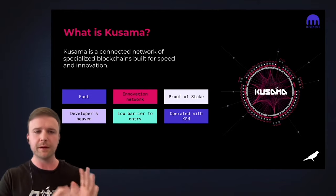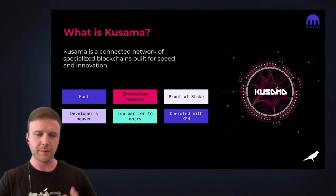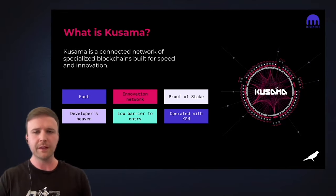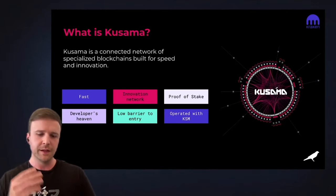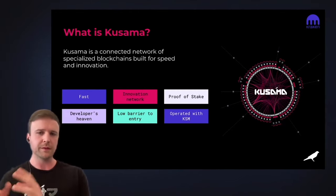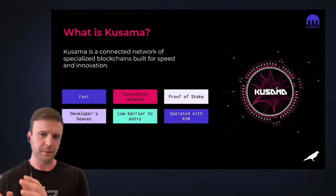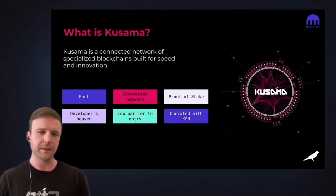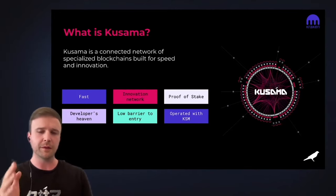Kusama is faster because of governance lead times, which is the ability to push code faster. It's a proof-of-stake network, just like Polkadot, run by a network of validators that validate the accuracy of each block. Through that process, there are staking rewards and staking of KSM tokens for the Kusama community. KSM is used for transactions as well as the staking mechanism. The low barrier of entry — I'll explain at the end how to launch on Kusama.